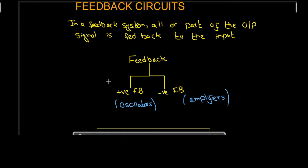If the feedback signal is positive with respect to the input signal, then we have positive feedback. If the feedback signal is negative with respect to the input signal, then we have negative feedback. Negative feedback leads to stability and is used in amplifiers to reduce the overall gain. Positive feedback leads to instability — it leads to oscillation — and that is why positive feedback is used in oscillators.